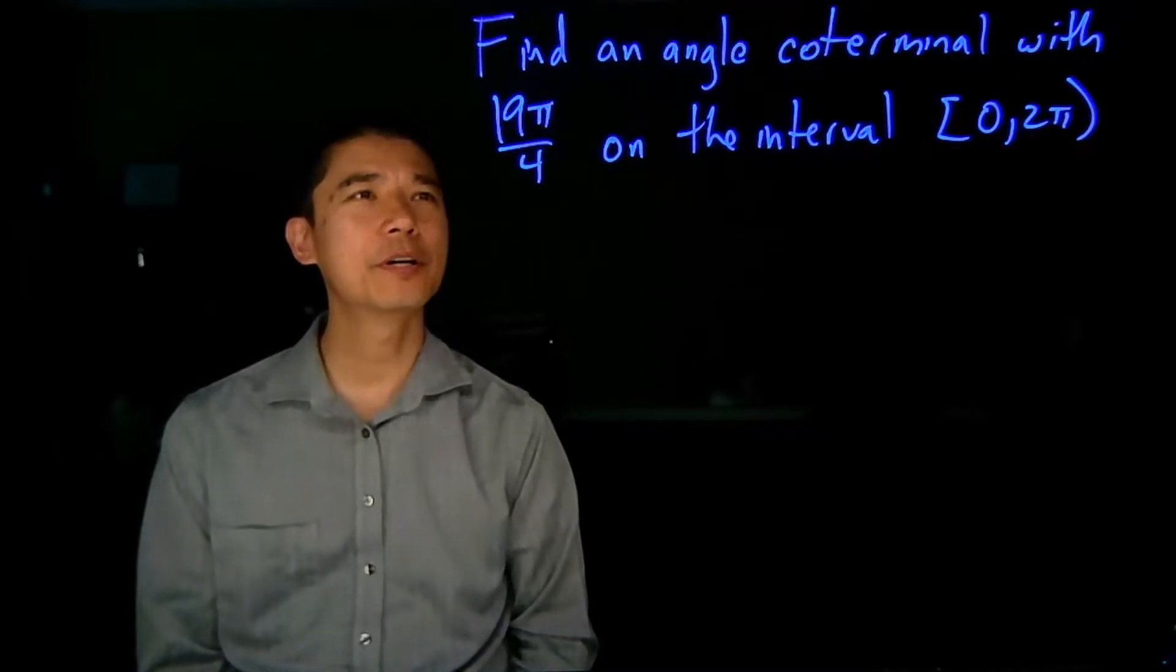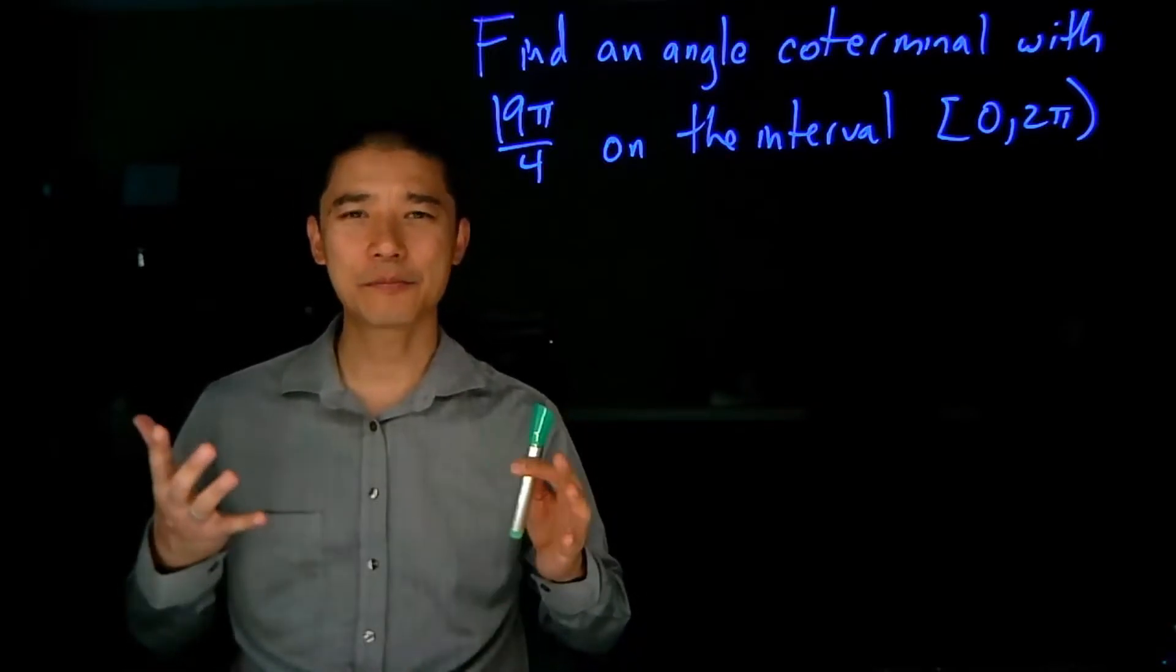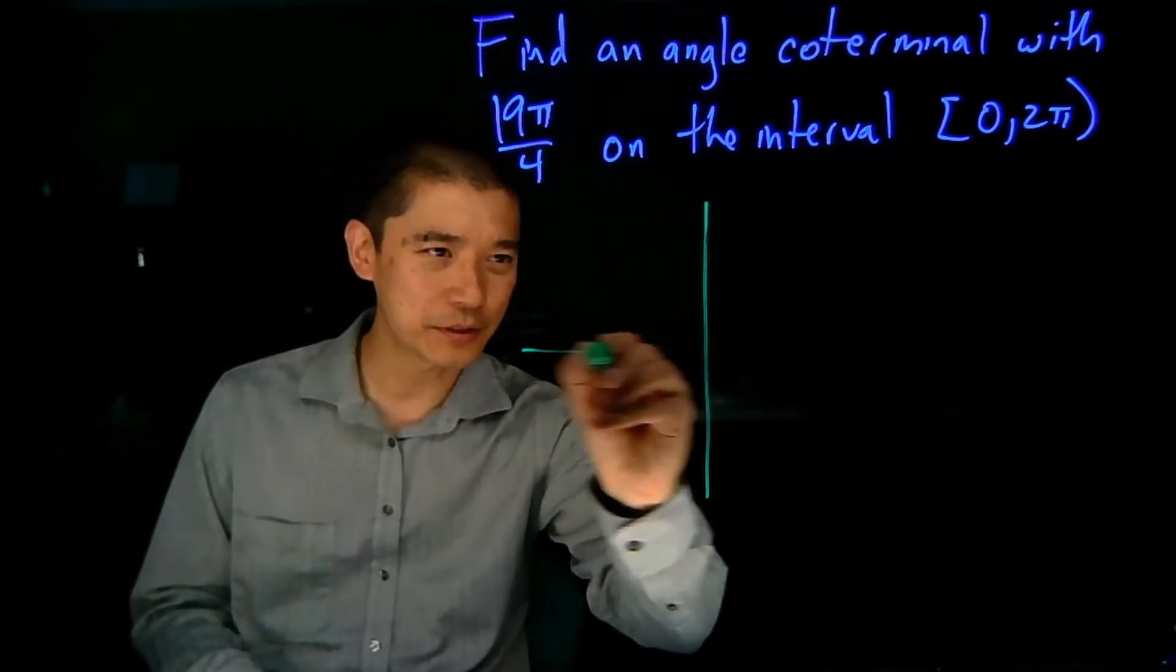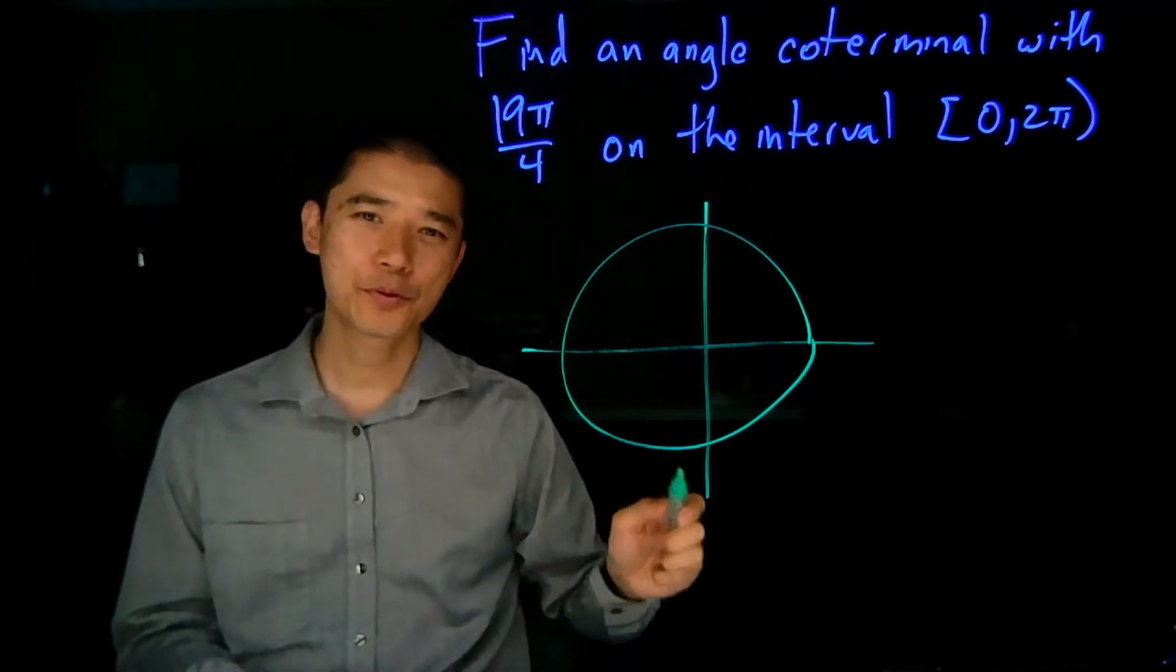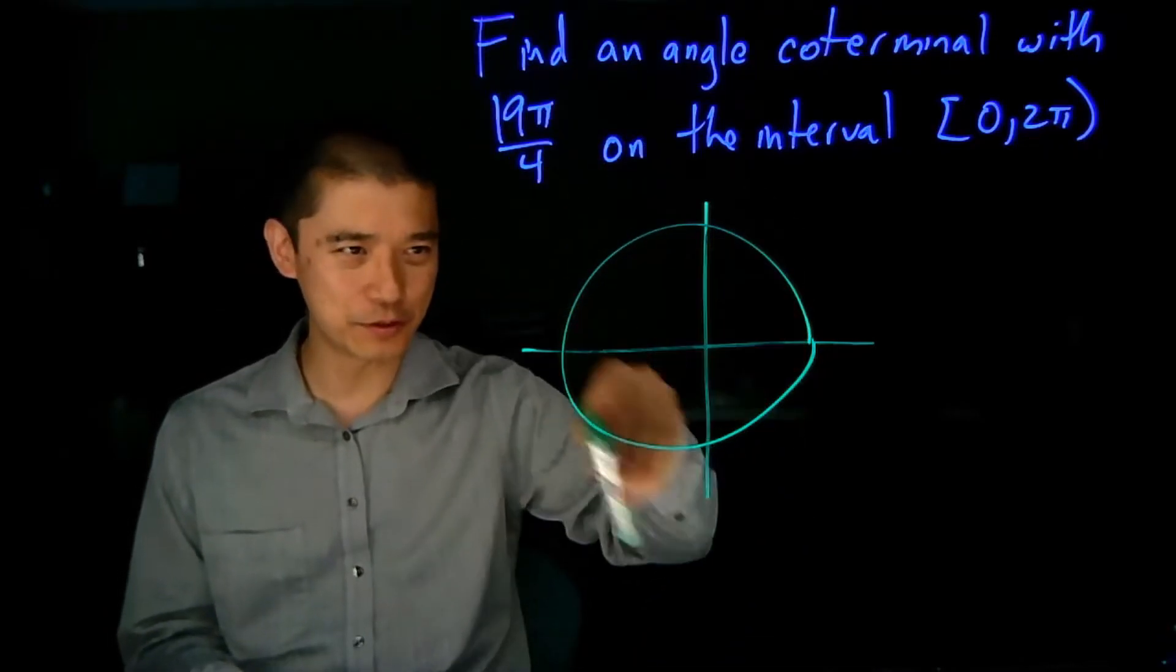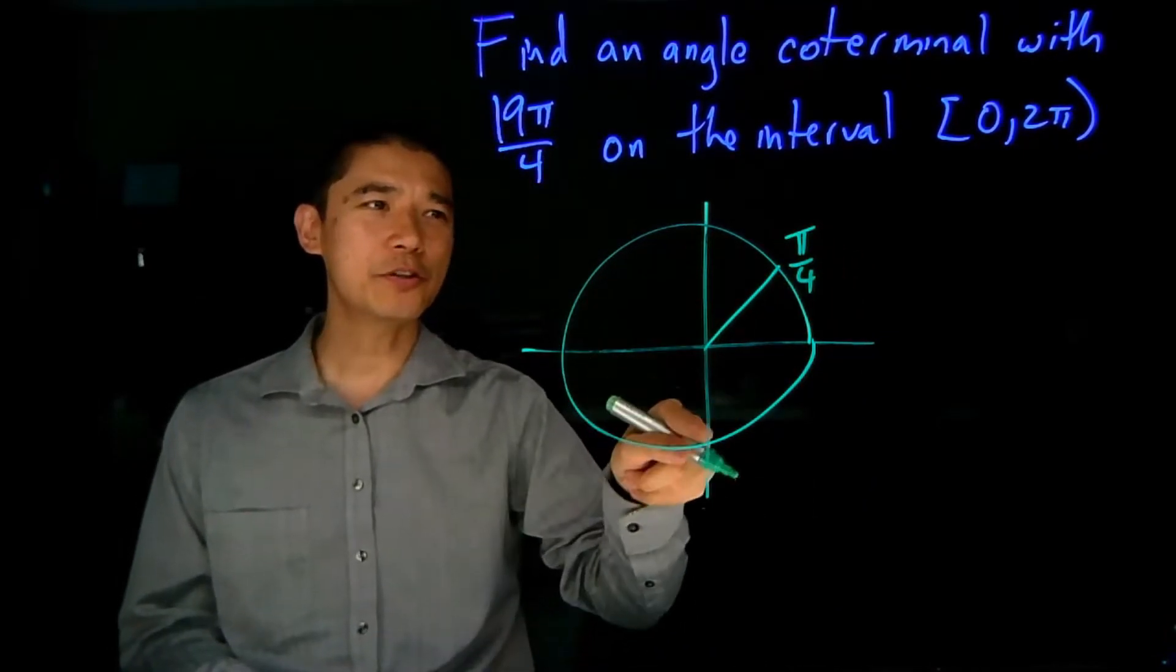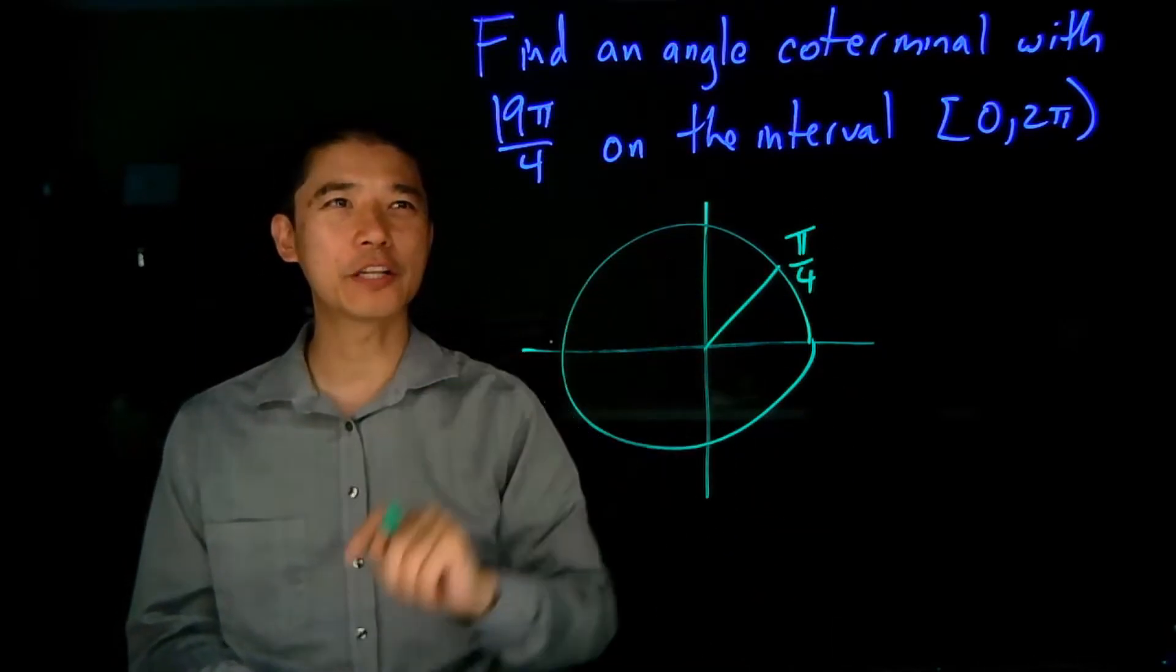So here's an example that we've seen before. Find an angle coterminal with 19π over 4 on the interval from 0 to 2π. Now, what's different in this approach is instead of last time where we just subtract 2π's until we get into this interval, we're actually going to think about this geometrically using the unit circle. So we'll sketch the circle here. This will work whenever this denominator is a 2, 3, 4, or 6, because those will be the denominators that we'll be working with in the unit circle diagram. Since there's a 4 denominator, we're going to look at the angle π over 4, which is the same as 45 degrees. What we're going to do is we're just going to work our way around the unit circle just like when we were filling in the values, except we're just going to keep on going until we get to 19π over 4.